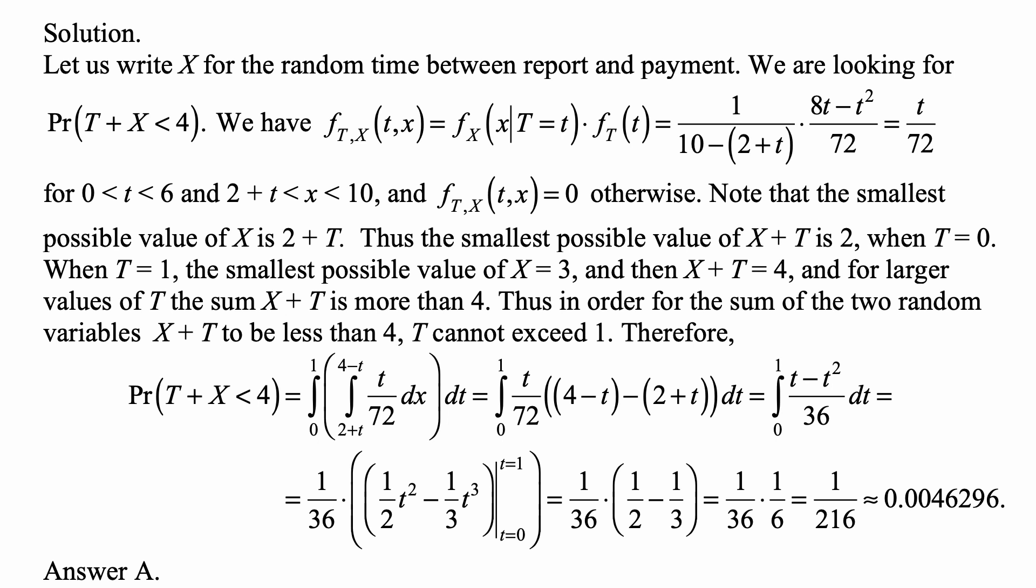We cancel out the 2 with 72 and make 72 into 36, and what we have left is 1-t in there. And multiplied by t gives us t - t², so we have the integral from 0 to 1 of (t - t²)/36 dt.